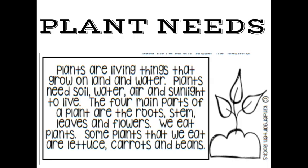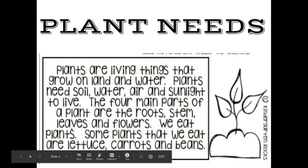Plant needs: Plants are living things that grow on land and water. Plants need soil, water, air, and sunlight to live. The four main parts of a plant are the roots, the stem, the leaves, and flowers.